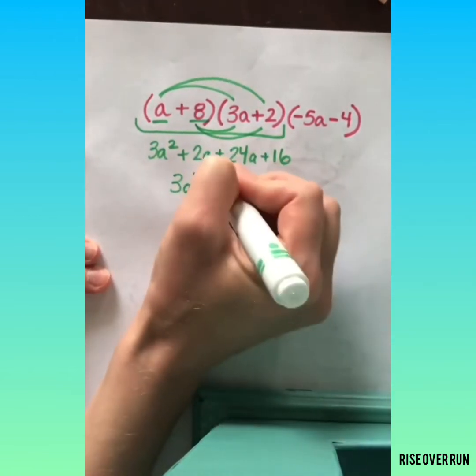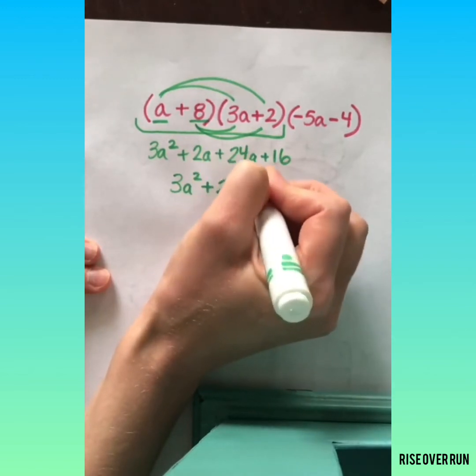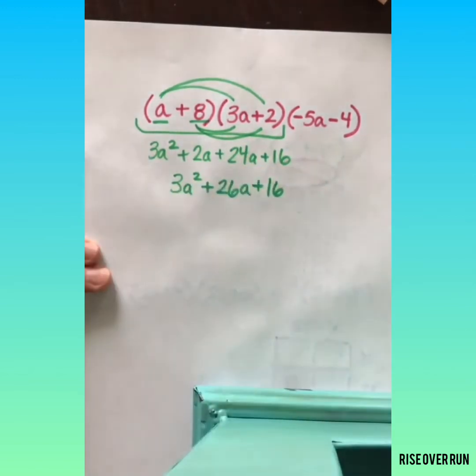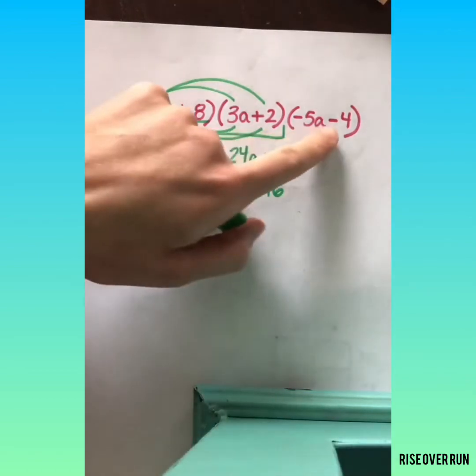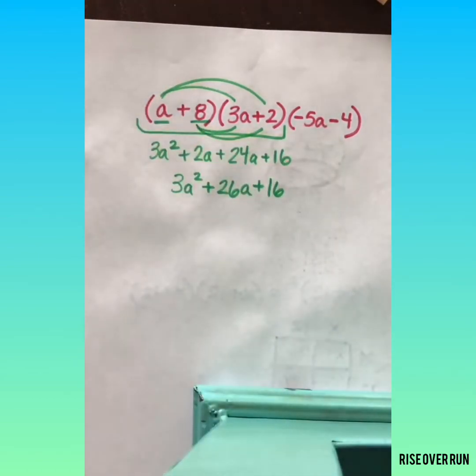Let's go ahead and clean this up by combining these like terms in the middle. 2A plus 24A is 26A. And we'll bring down the 16. Now we can move on and multiply by the third polynomial.